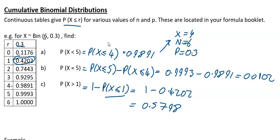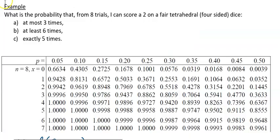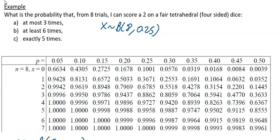Using your calculator is definitely the better method, but you can use your formula booklet if needed. The next example asks: what is the probability that from eight trials, scoring a two on a fair four-sided (tetrahedral) die occurs at most three times, at least six times, and exactly five times? X is distributed binomial with n equals 8, and p equals 1/4 or 0.25.